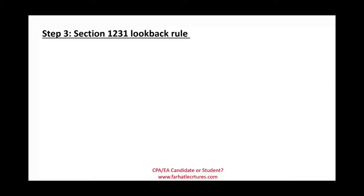Step three is the look-back period — this is why we kept saying 'potentially' long-term capital gain. Congress is generous, but not without limits. If you have a Section 1231 gain, you must look back over the past five years to see if you deducted any Section 1231 ordinary losses. If you did, those losses come back to catch up with you and reduce your capital gain.